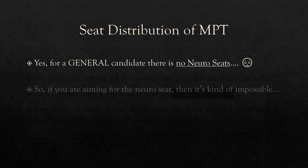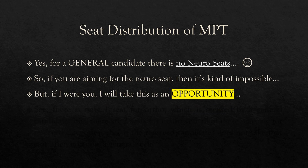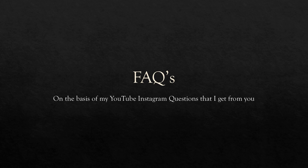From the previous slide you can see that for a general candidate there is no neuro seat, so if you are aiming for the neuro seat and you are a general candidate it seems impossible. But see it as an opportunity — there is only one seat for ortho secured by a general candidate, but there are two seats for neuro, all for reserved categories. However, if the reserved candidates do not take those seats, they can become general seats.